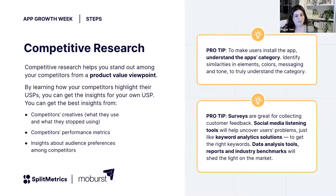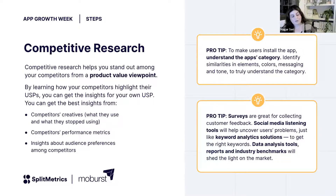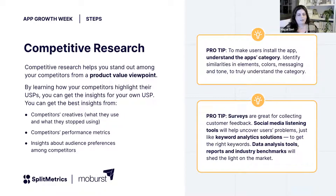The second part is competitors research. After identifying your market and target region, you want to see what competitors are doing, what creatives they're using, and most importantly, what they're not using anymore. We identify their A/B tests to see what they implemented and what they haven't. It's important to understand the colors of the category, elements, messaging, tone — there are trends with each category, and we really want to understand them.